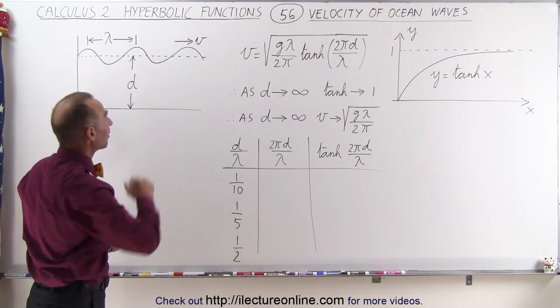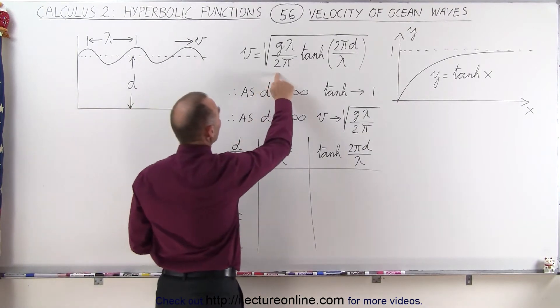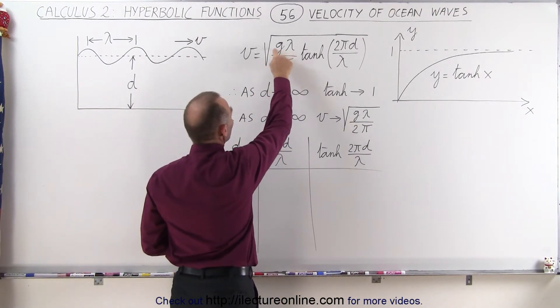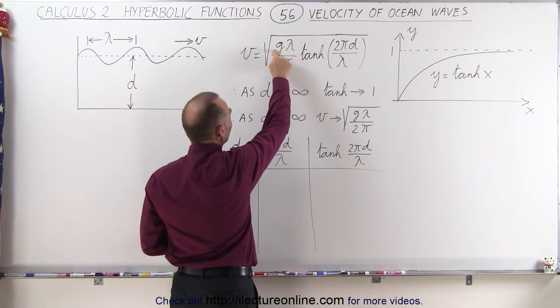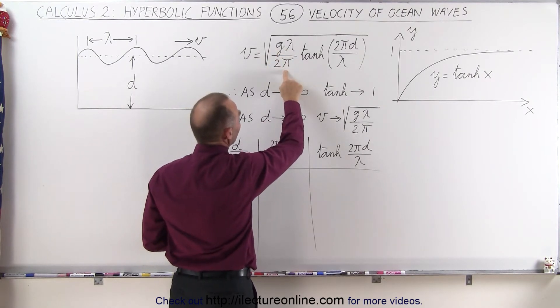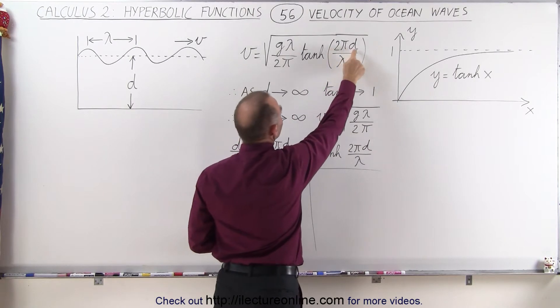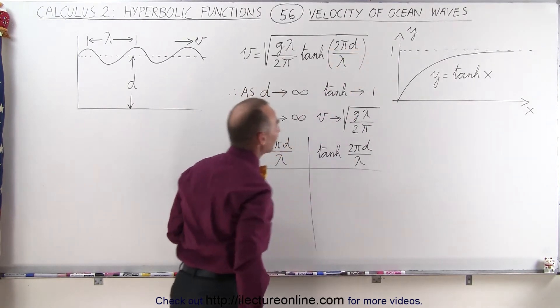Now the equation that describes the velocity of a wave like that is equal to the square root of g times the wavelength, g being the acceleration due to gravity, divided by 2π times the hyperbolic tangent of 2π times the depth, divided by the wavelength.